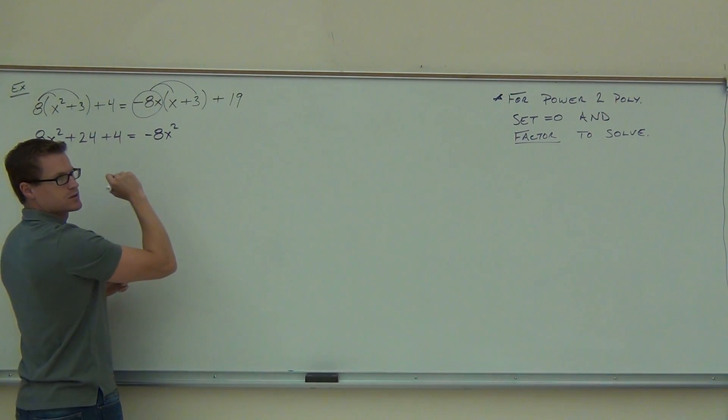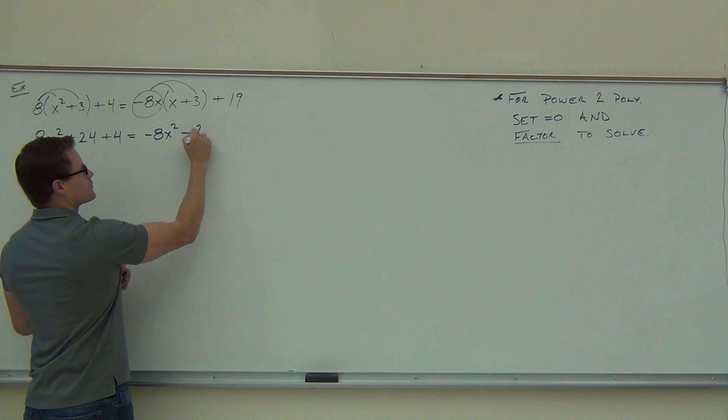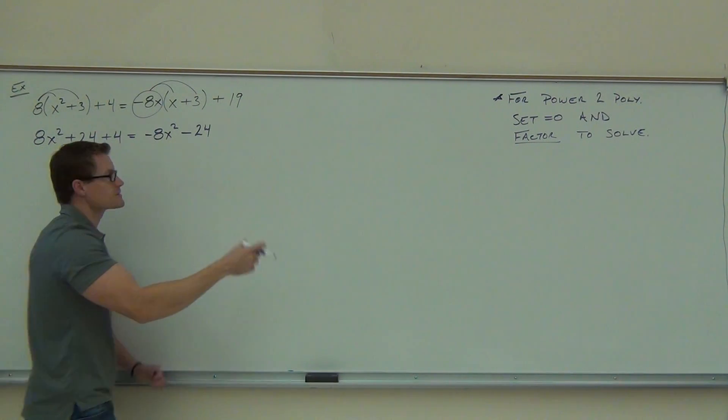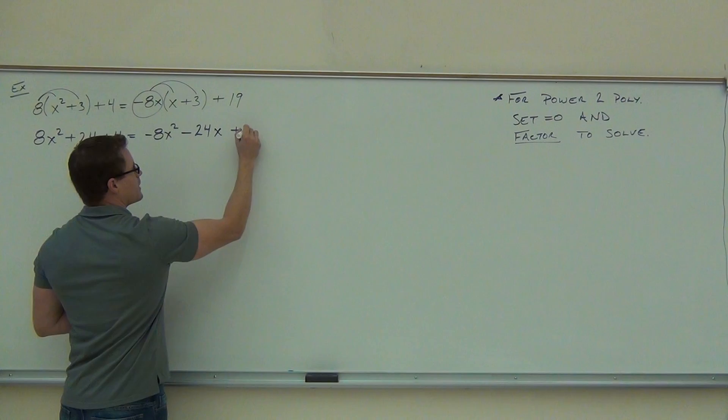That has to be there, otherwise your problem just blows up in your face. The next one, what are we going to have, plus or minus? Minus 24. Good, 24. Is it 24? 24x? That x is important, right? That x has to go with it. You're multiplying by that x. It's got to be there.